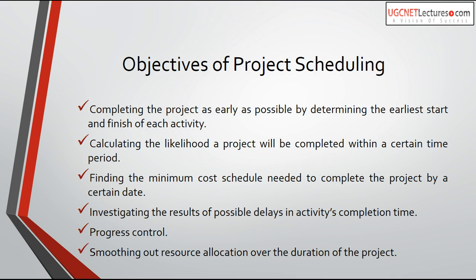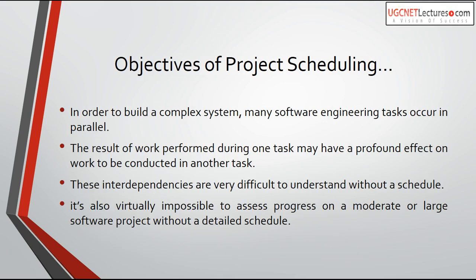Another objective is smoothing out resource allocation and duration of the project. With scheduling, you can also schedule resources — at what time, what resources should be given to which person or which activity. In complex systems, many software engineering tasks can occur in parallel. The result of work in one task may have a profound effect on work in another task. For example, if you change the design of a module, you also have to change the coding. So some activities are dependent on each other.